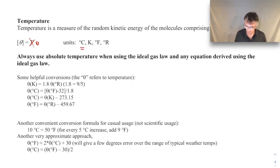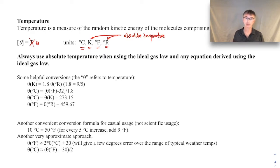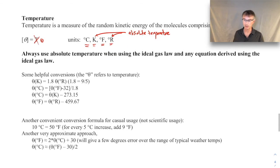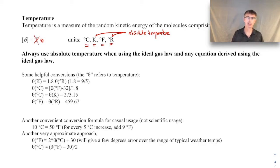The units we use are degrees Celsius or Kelvin, and in the English system degrees Fahrenheit or degrees Rankine. Kelvin and Rankine are absolute temperatures. Just as with absolute pressure, when using a temperature in the ideal gas law, doing ratios of temperatures, or any equation derived from the ideal gas law, you must use absolute temperatures — meaning Kelvin or degrees Rankine. Degrees Celsius and Fahrenheit are more for everyday convenience; for scientific calculations, use Kelvin or Rankine.